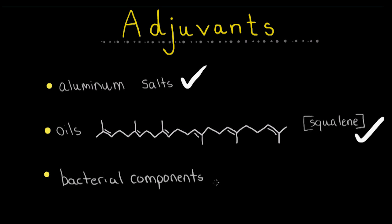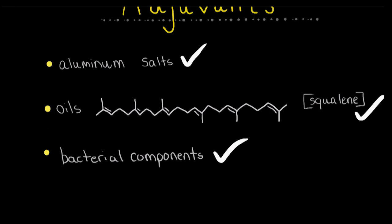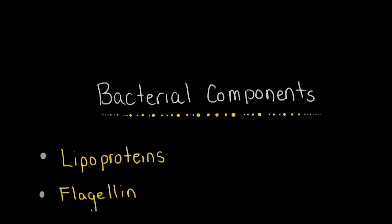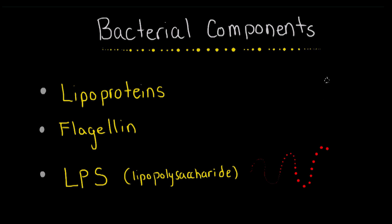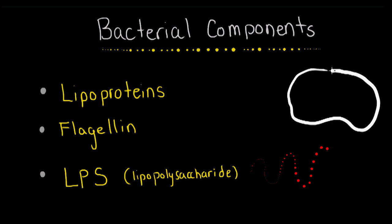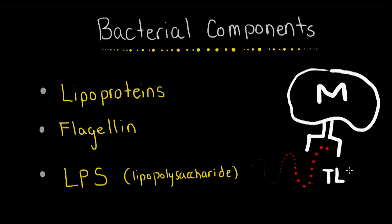Adjuvants may include aluminum salts, oils, and even bacterial components such as lipoproteins, flagellins, and LPS or lipopolysaccharides, which are recognized by TLR — toll-like receptors — specifically number 4, found commonly on macrophages.